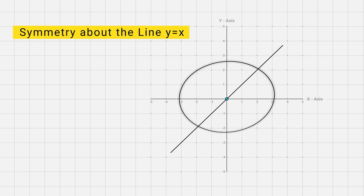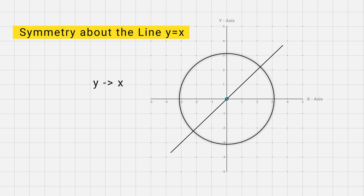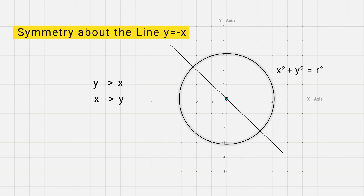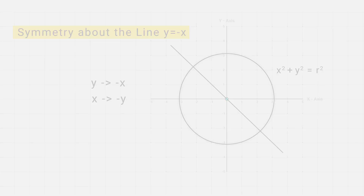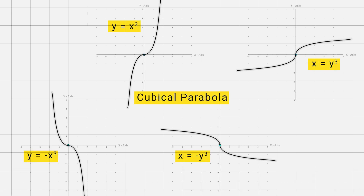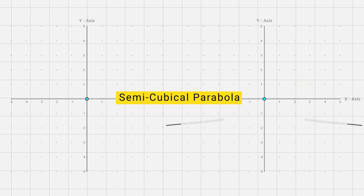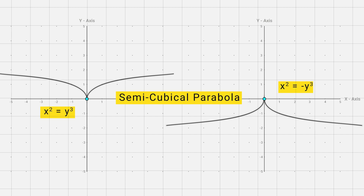The curve is symmetrical about the line y equal to x if the equation remains unchanged on replacing y with x and x with y — for example, x squared plus y squared equal to r squared. Similarly, the curve is symmetrical about the line y equal to minus x if the equation remains unchanged on replacing x with minus y and y with minus x. Some curves are symmetrical in opposite quadrants because when we replace x with minus x and y with minus y the equation remains unchanged, and they all pass through the origin. Other curves are symmetrical about the x-axis because the equation contains only even powers of y, and similarly some are symmetrical about the y-axis because the equation contains only even powers of x.